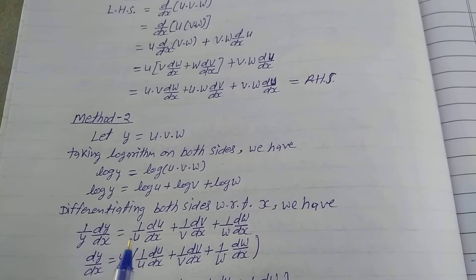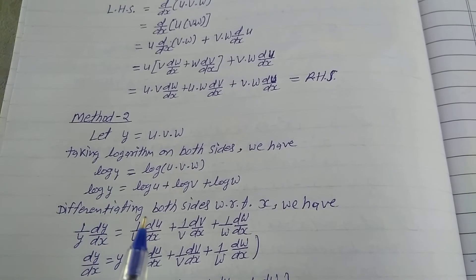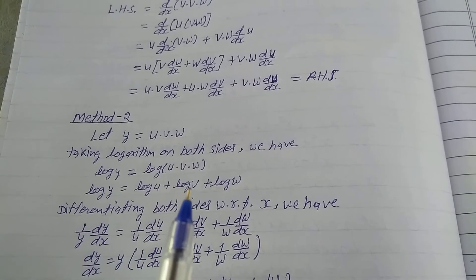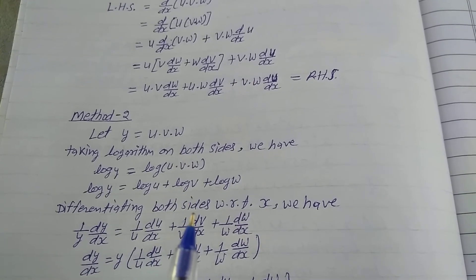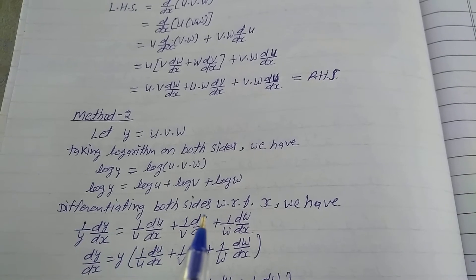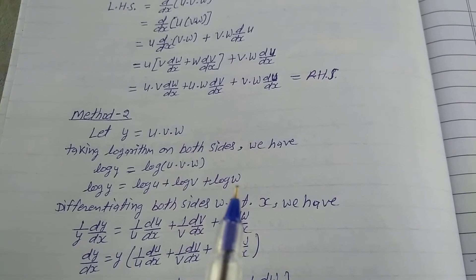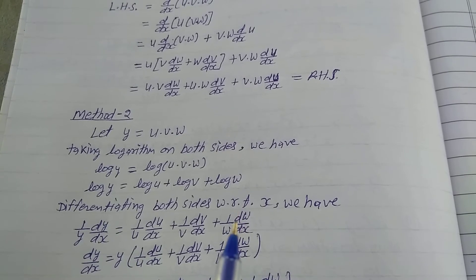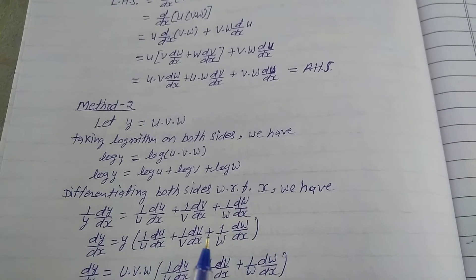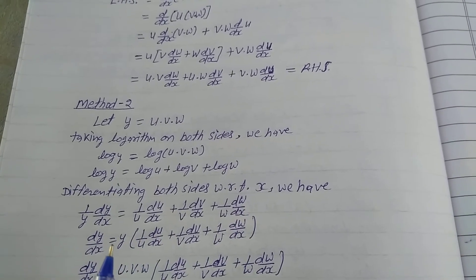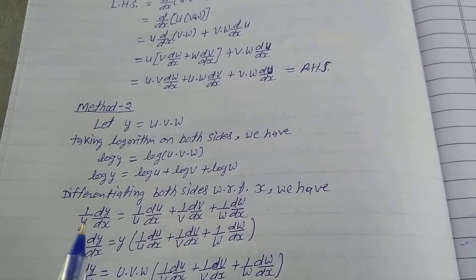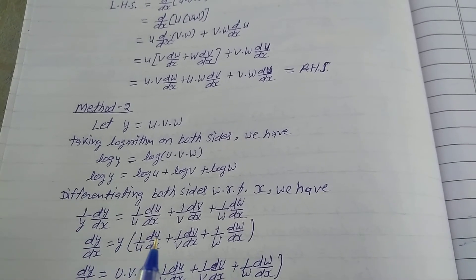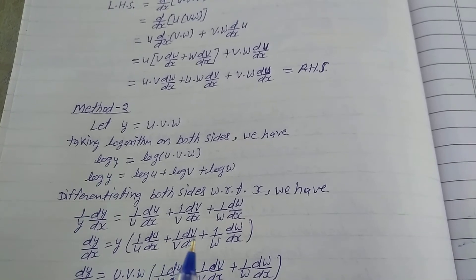So 1/y · dy/dx = 1/u · du/dx + 1/v · dv/dx + 1/w · dw/dx. Therefore dy/dx = y times [1/u · du/dx + 1/v · dv/dx + 1/w · dw/dx].